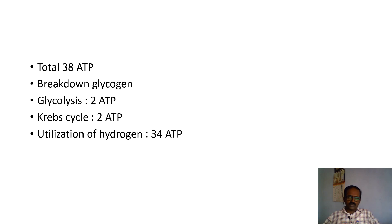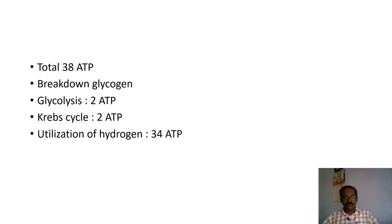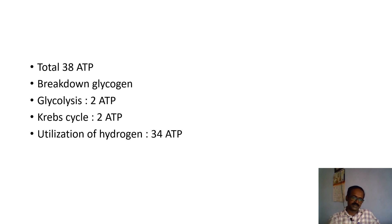Breakdown of total ATP production: during glycolysis, 2 ATP are produced; during the Krebs cycle, another 2 ATP are produced; during the utilization of hydrogen atoms, 34 ATP are produced. So a total of 38 ATP are produced during glycolysis overall.